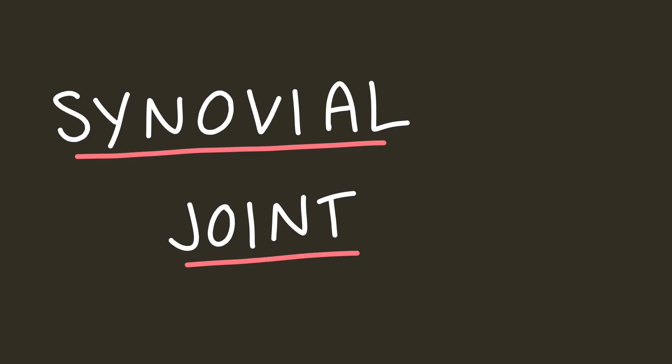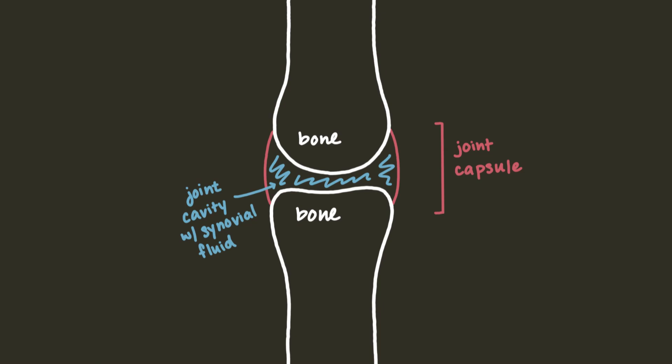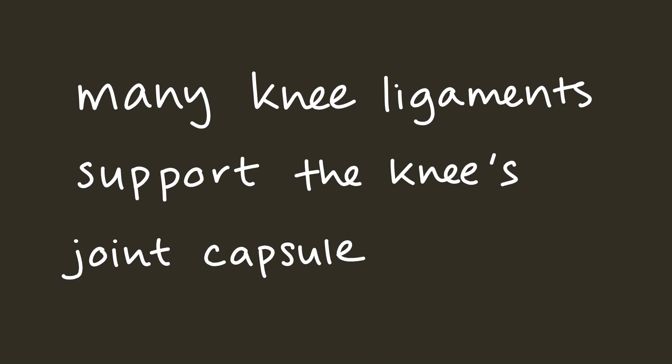The knee joint is a type of synovial joint. This means that it has a cavity filled with something called synovial fluid, which reduces friction and wear and tear in the joint. This cavity is surrounded by a joint capsule. The synovial joint could very easily be the topic of a video of its own, but I briefly mention it now because the knee has a lot of tendons and ligaments that stabilize its joint capsule.